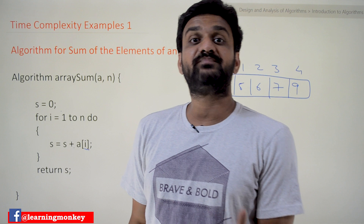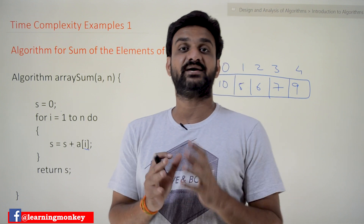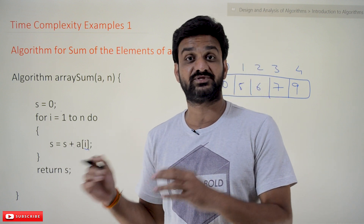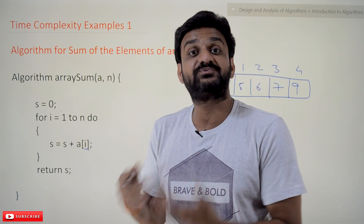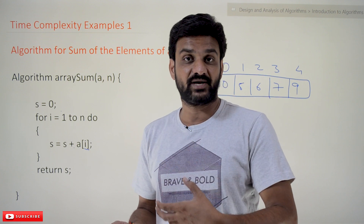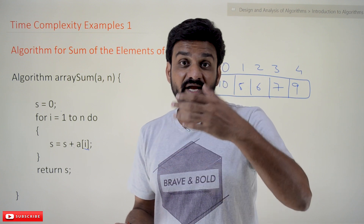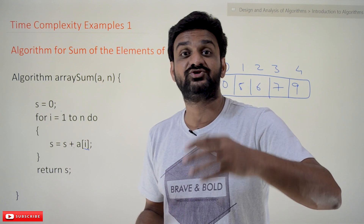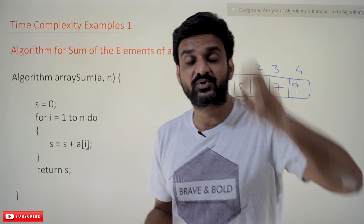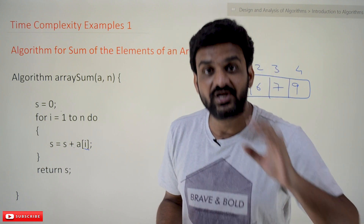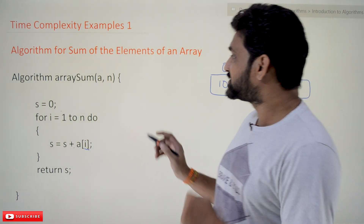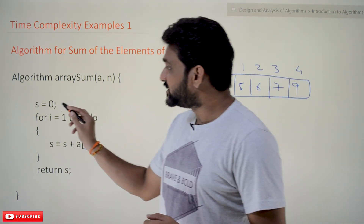Now we'll try to find the time complexity of the algorithm. Time complexity is the count of program steps — the number of program steps that are executed before completion of the program. The sum of all those executions of program steps is what we call the time complexity of an algorithm. Let's try to understand this line by line.